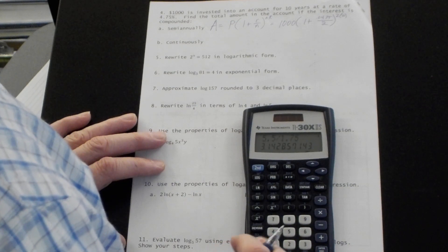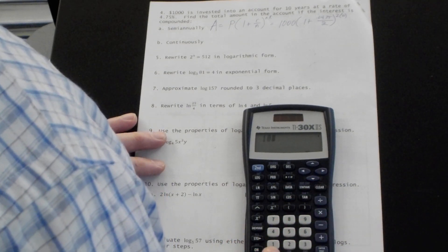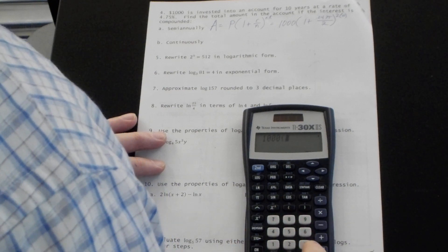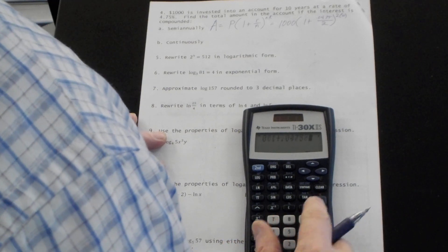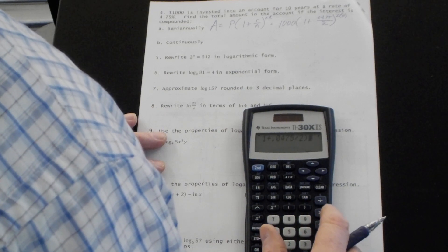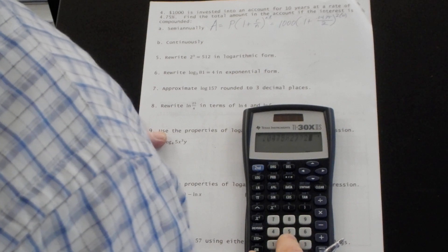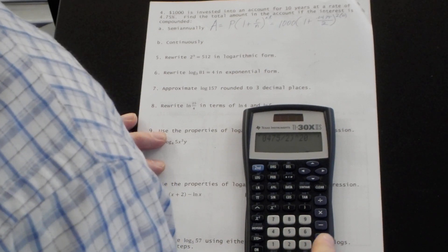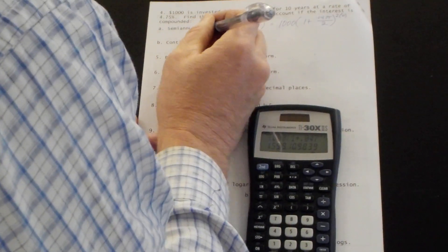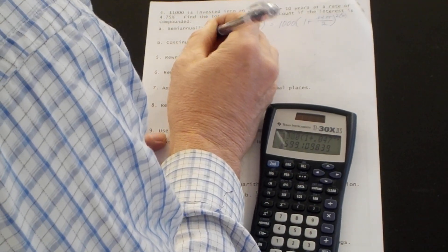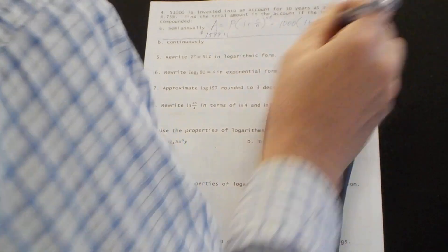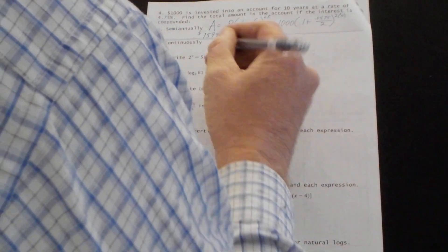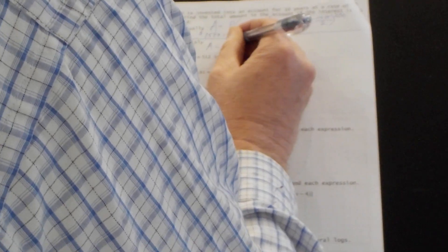So I'm going to take 1,000 times one plus 0.0475 divided by two. And then I'm going to raise that to the 20th power. And I'm looking at the account has got $1,599.11 in it after 10 years.